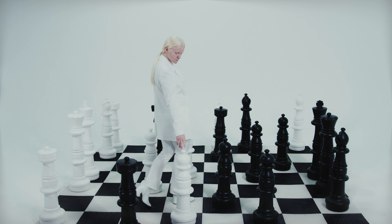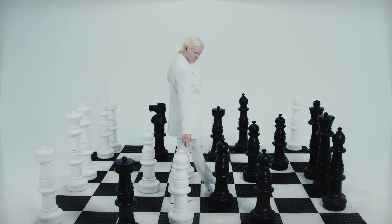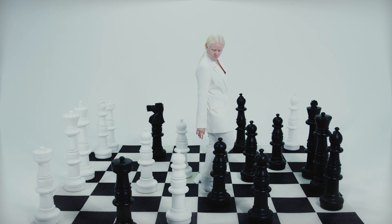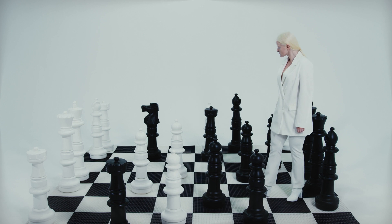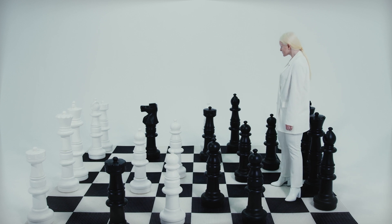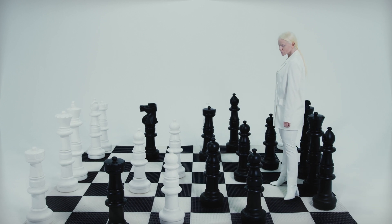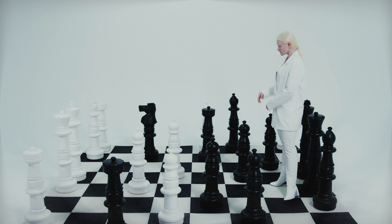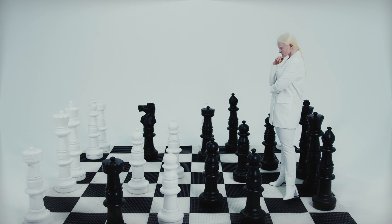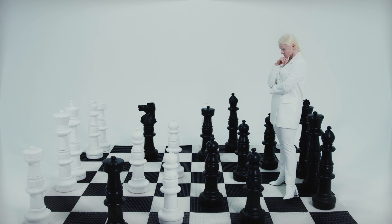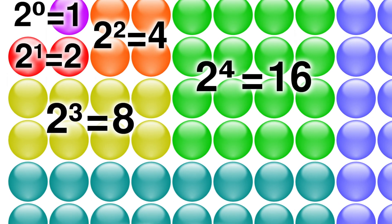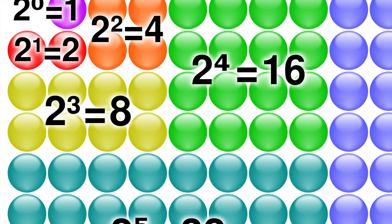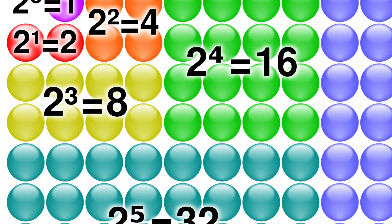At first it may not seem like a big deal, but as we go through the squares and double the number of grains each time, we are dealing with exponential growth. To calculate the number of grains on any square, we use the formula 2 to the power of n minus 1, where n is the square number.